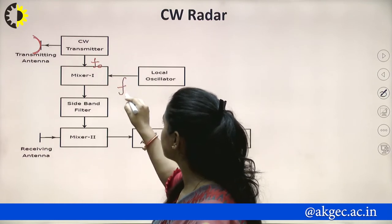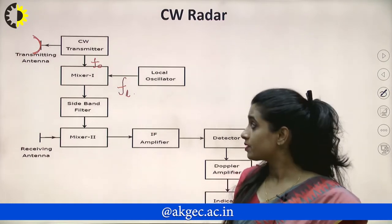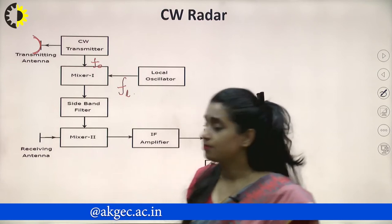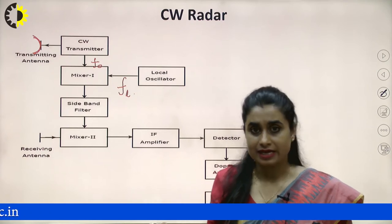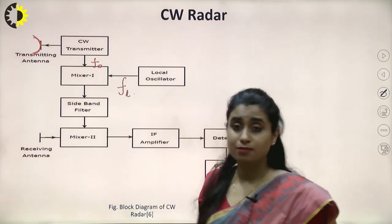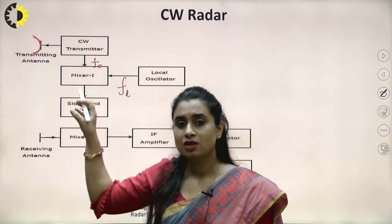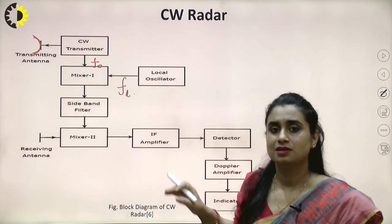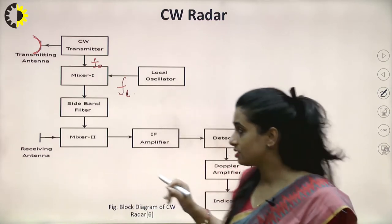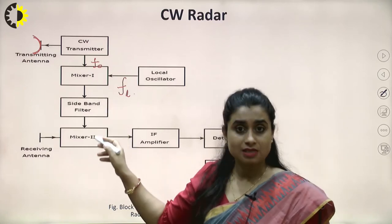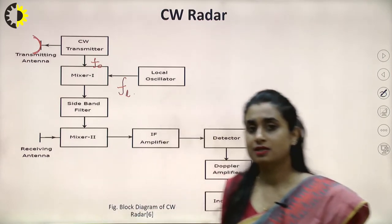The local oscillator frequency is represented by fl. The mixer or product modulator is capable of generating different frequencies - it can generate fo plus fl or fo minus fl. Depending on the filters used, we choose the frequency as per the requirement. We use one more mixer, which is another product modulator. One of the input frequencies to this second product modulator will be either the sum frequency or the difference frequency.